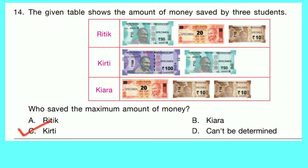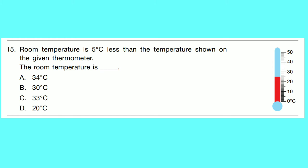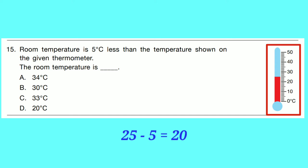Question number 15: Room temperature is 5 degrees Celsius less than the temperature shown on the given thermometer. The room temperature is dash. Temperature reading shown on the thermometer: 25. 5 degrees less than 25 equals 25 minus 5 equals 20. So correct option is D: 20 degrees Celsius.